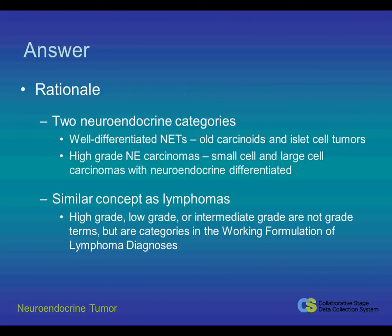To further explain, there are two neuroendocrine categories. Well-differentiated neuroendocrine tumors, which is the old carcinoid term that we are used to, and islet cell tumors. The other type is high-grade neuroendocrine carcinomas, which include the small cell and large cell carcinomas with neuroendocrine differentiation. This is a similar concept as lymphomas that registrars are very familiar with — in lymphomas, high-grade, low-grade, and intermediate-grade are not truly grade terms, but are categories in the working formulation of lymphoma diagnoses. So it's the same situation here: well-differentiated does not refer to the grade, but rather the classification or the category of neuroendocrine tumor.